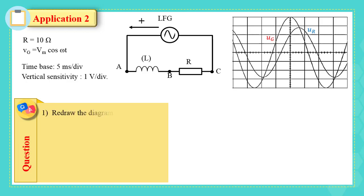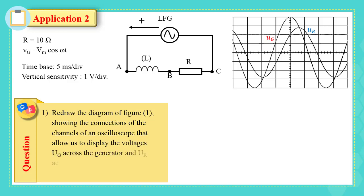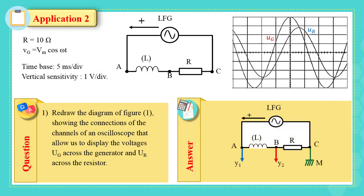Question 1: Redraw the diagram of Figure 1 showing the connections of the channels of an oscilloscope that allow us to display the voltages Ug across the generator and Ur across the resistor. The following figure represents the channels of the oscilloscope, where channel 1 is connected at point A, channel 2 at point B, and the ground is connected at point C. So Y1 measures the voltage Uac across the generator, and Y2 measures the voltage Ubc across the resistor.